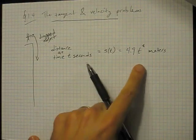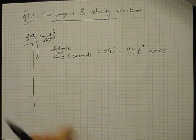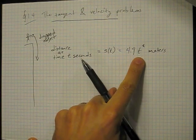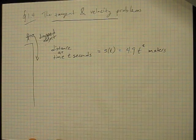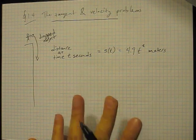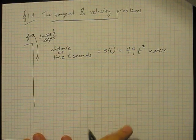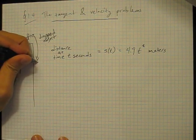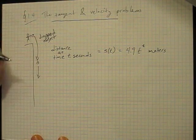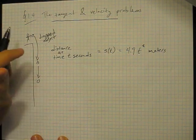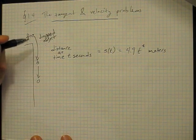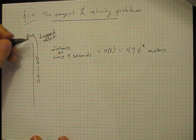So that means that however long the object has been falling for, you just put that value in for t, square it, multiply it by 4.9. And this tells you, if you ignore air resistance, this tells you the distance that the object has fallen. So as the object is falling, it's picking up speed. And so we would like to talk a little bit about the speed of the object.